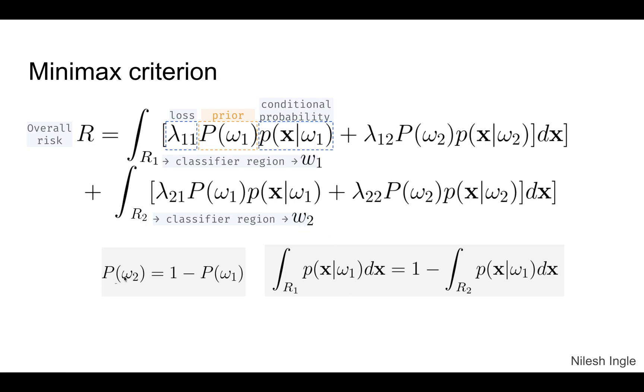Points to note here is that this equation can be simplified by noting that the probability for omega 2 is equal to 1 minus the probability of omega 1, and the integral over R1 for the conditional probability p of x given omega 1 class is equal to 1 minus the integral over R2 space for the same class.